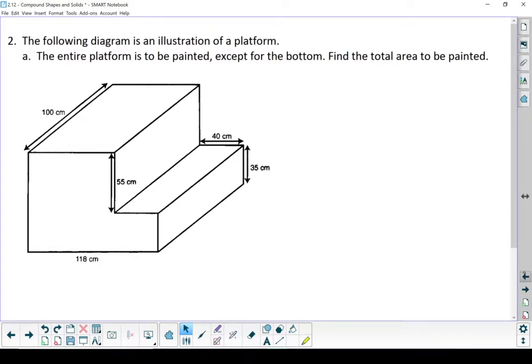Let's move on to another example here. Here we've got a diagram of a platform. We're going to paint the entire platform, everywhere except the bottom.